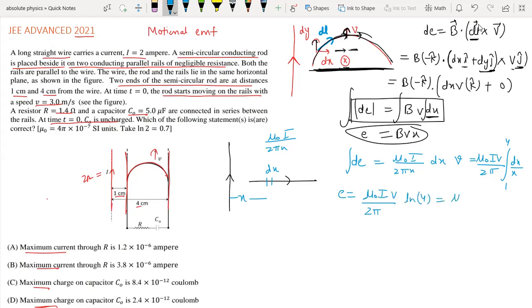Using ln(4) = 2ln(2) ≈ 1.4, this gives E = (μ₀Iv)/(π) × ln(2). This is the required EMF in this arc.